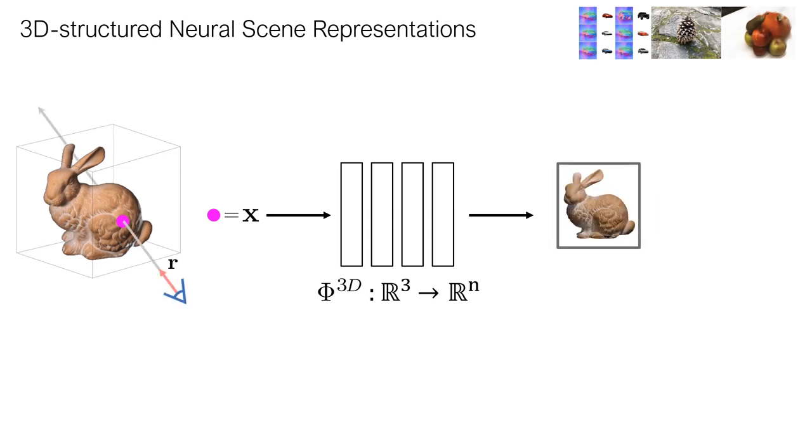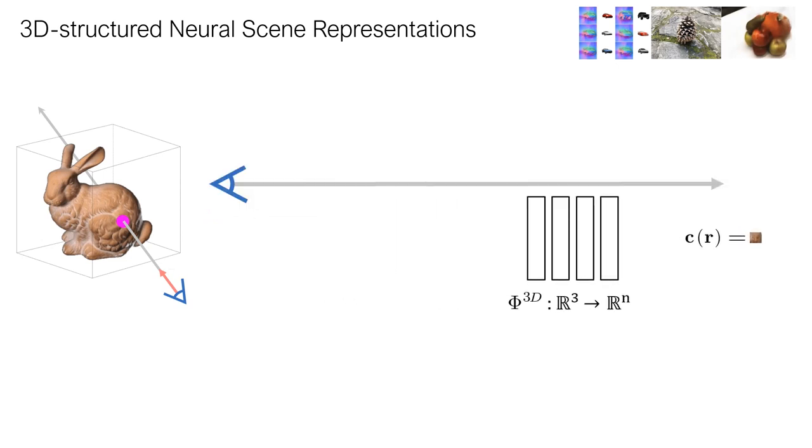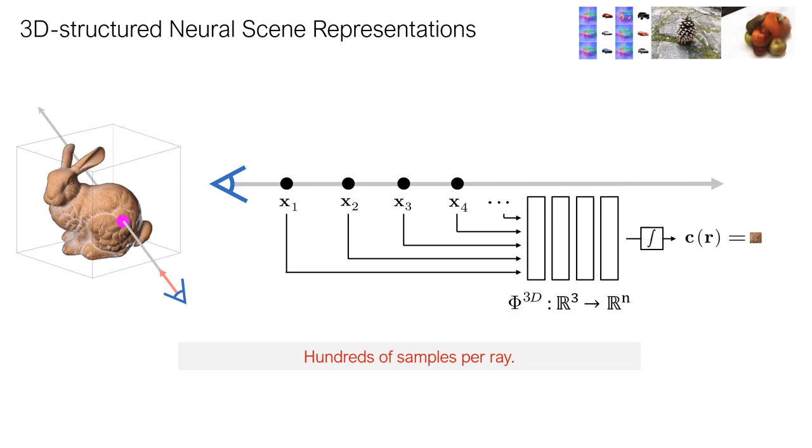Suppose we wish to render a scene represented by a 3D neural representation from a novel camera perspective. This involves computing the color viewed by every ray R seen by the camera. In current approaches, this is an expensive operation, requiring the sampling of hundreds of points along the ray, the evaluation of the implicit representation at those points, and the integration of the data produced by the implicit representation via an auxiliary algorithm.